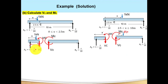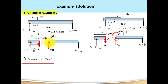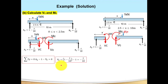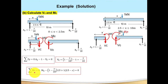Now let us calculate Vc and Mc for the left beam segment. I have taken this segment. Summation of forces along Y equals zero: Ay (positive, upward) minus 1 kN (downward) minus Vc (downward per sign convention) = 0. Rearranging: Vc = Ay − 1 = (1 − X/10) − 1 = −X/10. Therefore, Vc = −X/10.